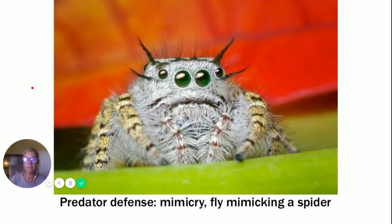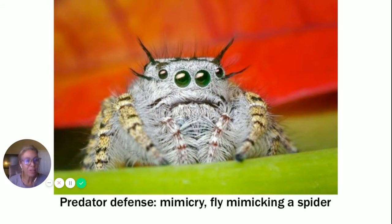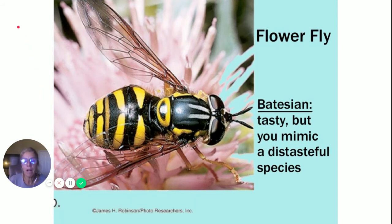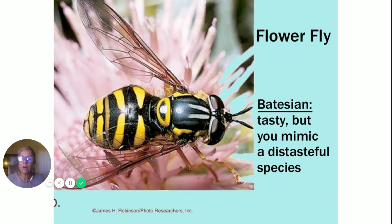This is mimicry — an anti-predator defense where one species resembles another species or something in their environment. This fly is mimicking a spider and moves like a spider but is a fly. This is a flower fly that looks like a bee or wasp with black and yellow coloring. This is called Batesian mimicry: you are tasty but mimic something that is distasteful. The fly has no stinger or bite but is mimicking an organism that does.